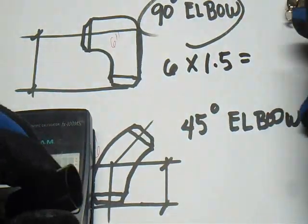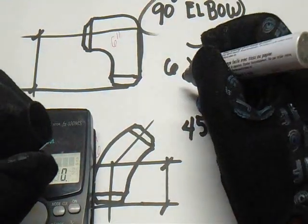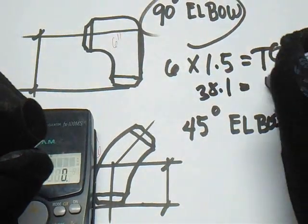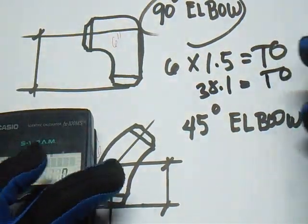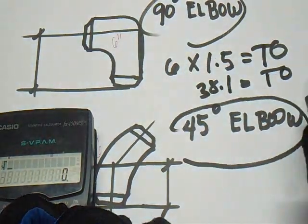It was take-off, or 6 inches multiplied by 38.1 was take-off. Okay, for the 45-degree elbow.